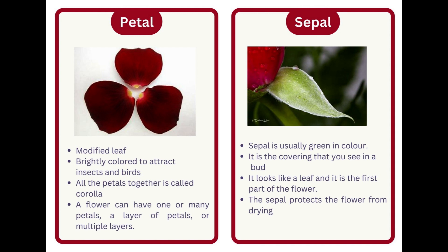Sepal. Sepal is usually green in color. It is the covering that you see in a bud. It looks like a leaf and it is the first part of the flower. The sepal protects the flower from drying.